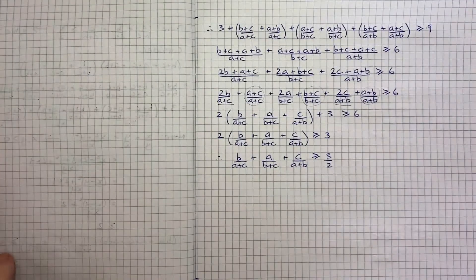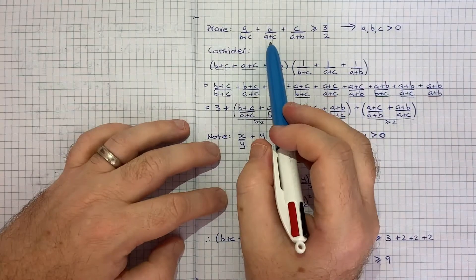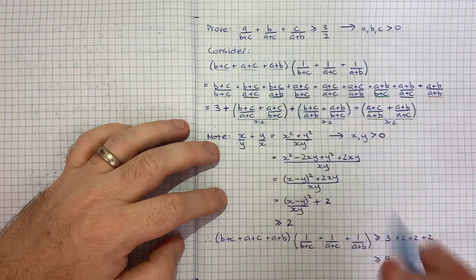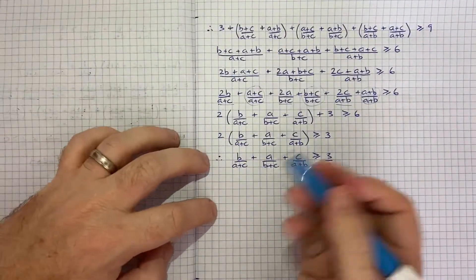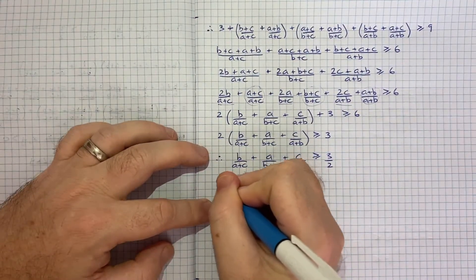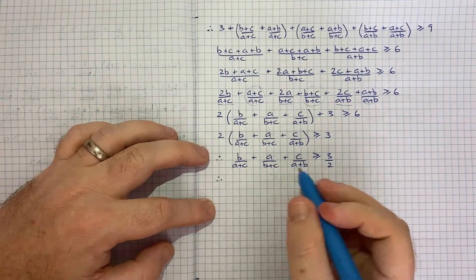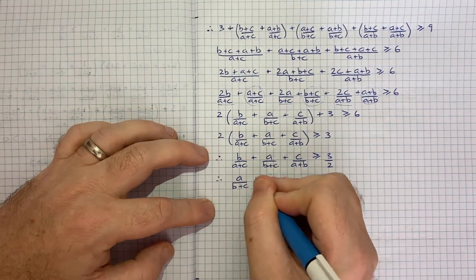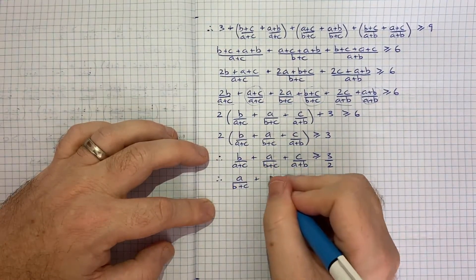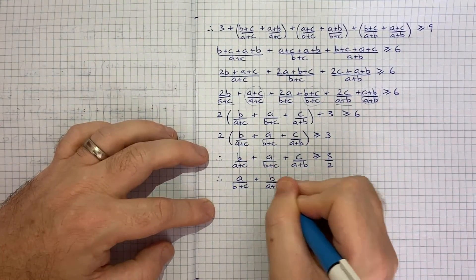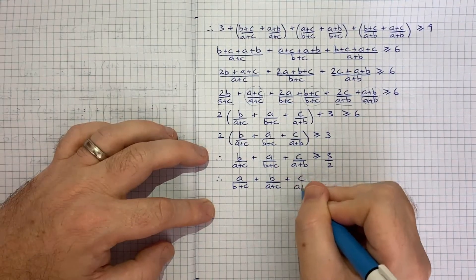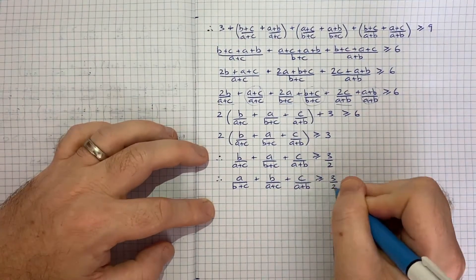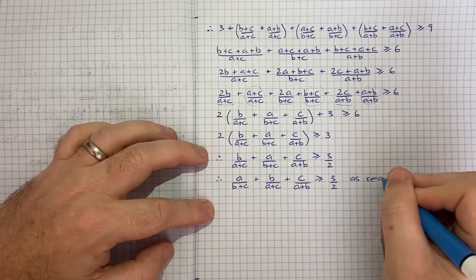Looking at the terms — b/(a+c), a/(b+c), c/(a+b) — rewriting in the correct order: a/(b+c) + b/(a+c) + c/(a+b) ≥ 3/2, as required. That's exactly the result we were asked to prove.